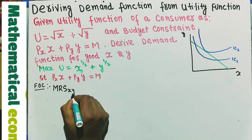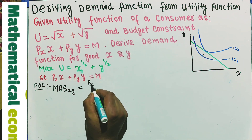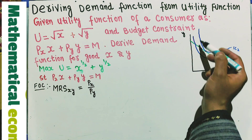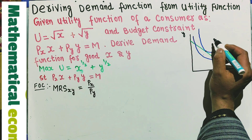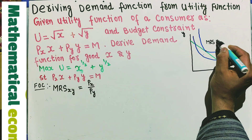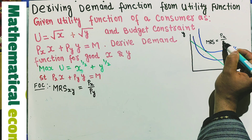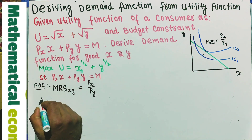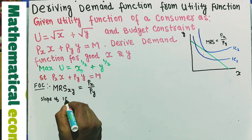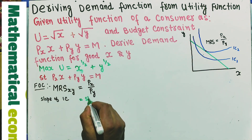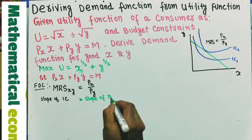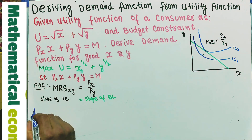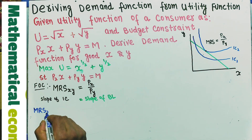The tangency condition states that the Marginal Rate of Substitution between goods x and y should be equal to the ratio of prices, Px/Py. This is satisfied at the point where the indifference curve and the budget line are tangent to each other. At this point, the slope of the indifference curve equals the slope of the budget line. MRS between good x and y is simply the ratio of the marginal utility of x to the marginal utility of y.